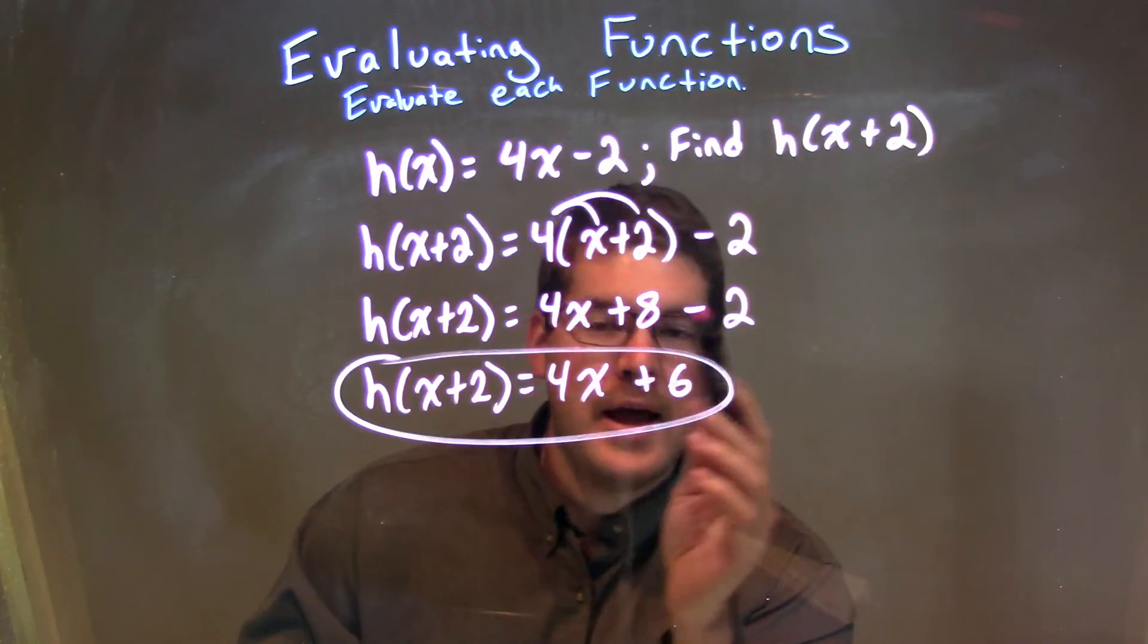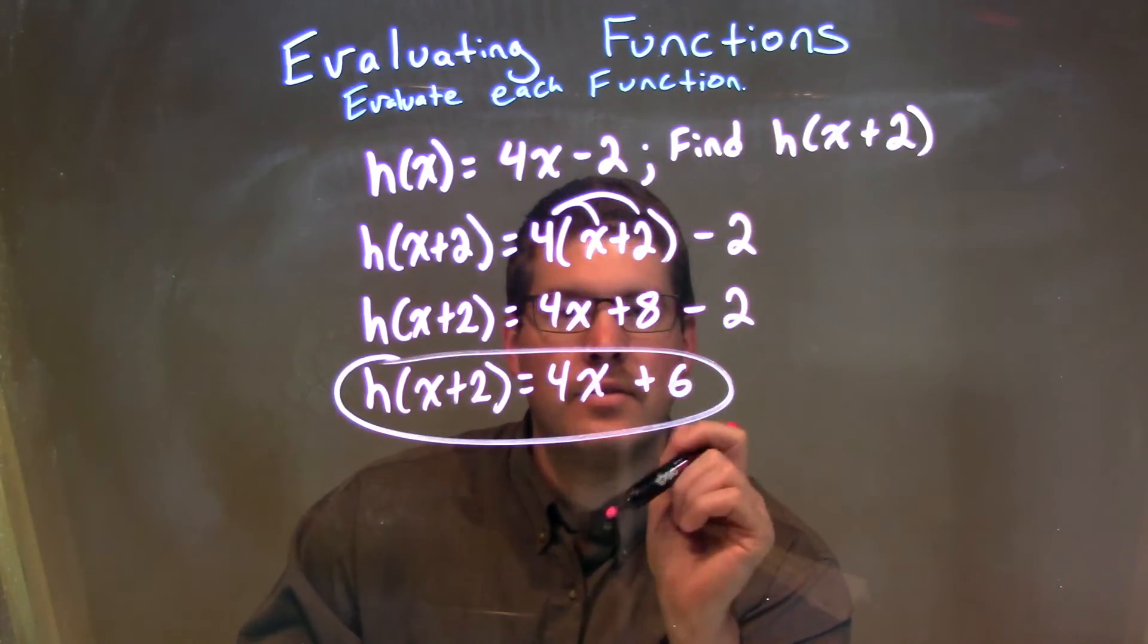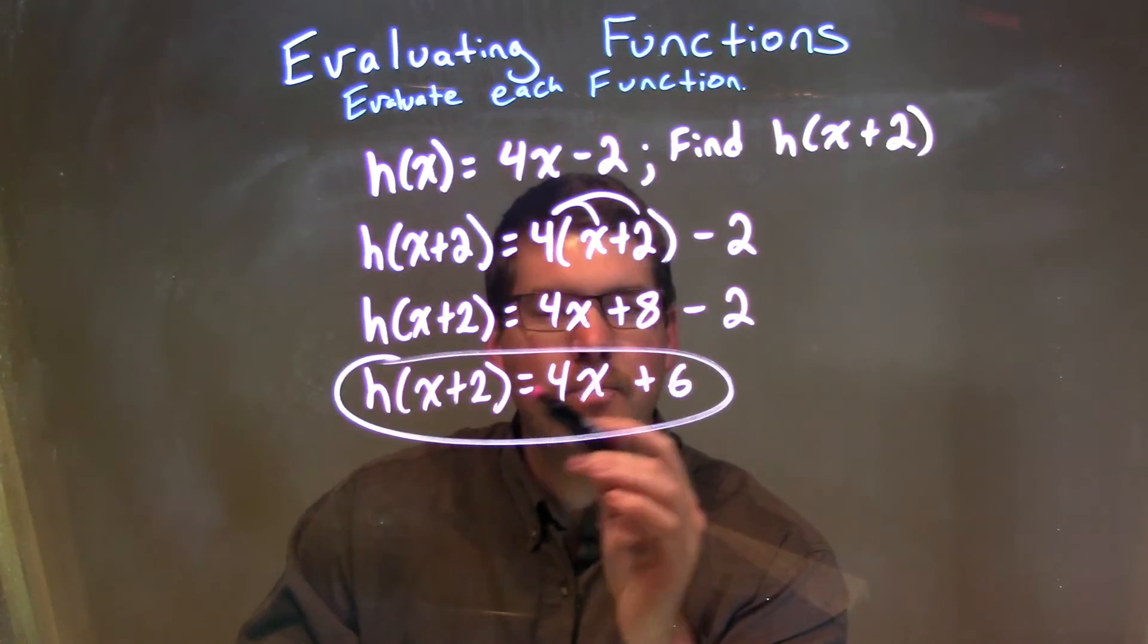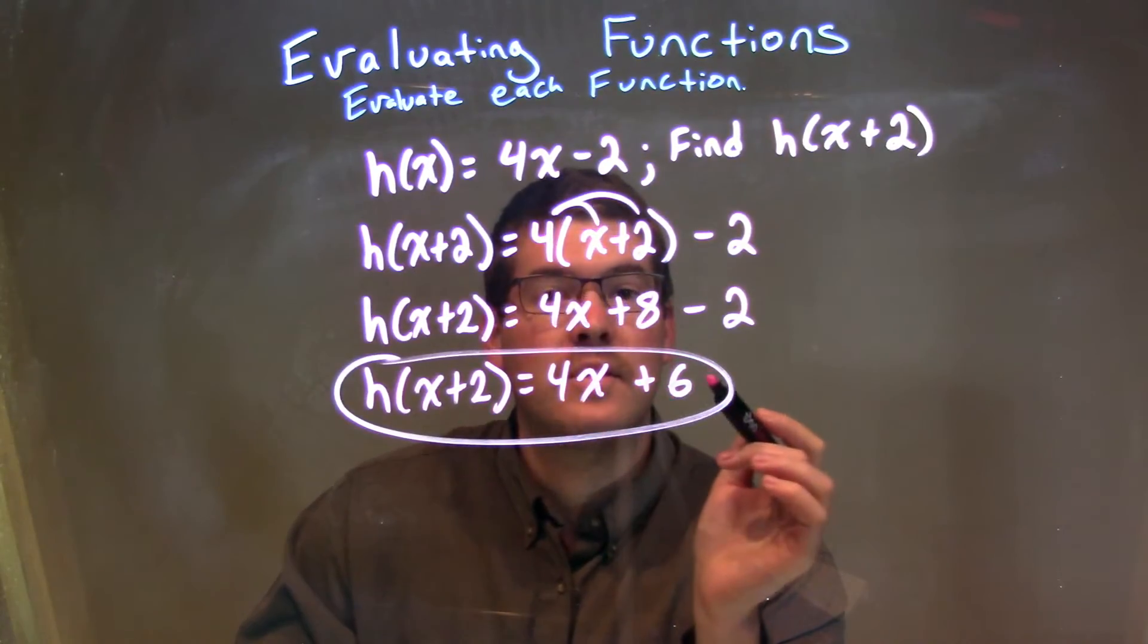The only thing we can combine here is the 8 and the minus 2, which gives us a positive 6. So, again, our final answer here is just h of x plus 2 is equal to 4x plus 6.